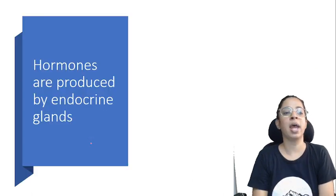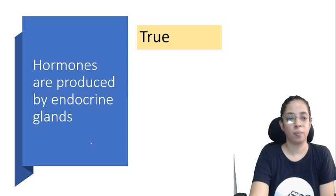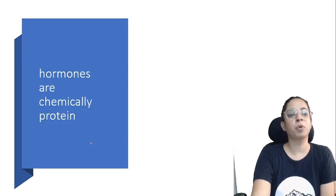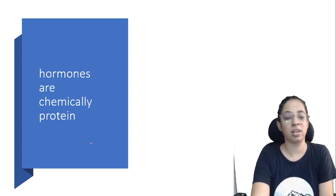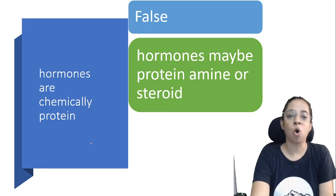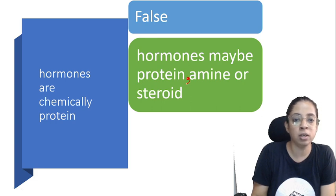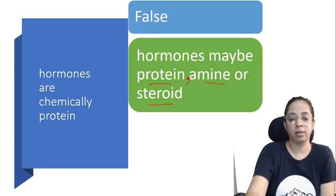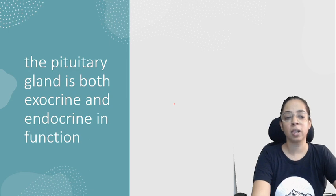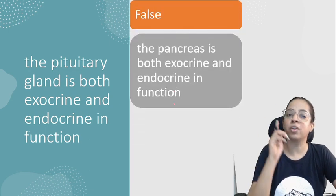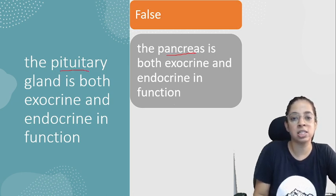Hormones are produced by endocrine glands — true. Hormones are chemically protein — this is false; hormones may be protein, amine, or steroid. The pituitary gland is both exocrine and endocrine in function — this is false; it is the pancreas that is both exocrine and endocrine in function.